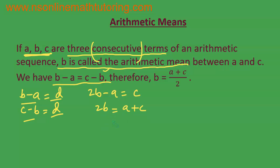Finally, if we divide the entire equation by 2, we get b is equal to a plus c over 2. We know that the average of any two numbers is their sum divided by 2. Therefore, b is said to be the arithmetic mean of the numbers a and c — the preceding and succeeding numbers. This is the meaning of arithmetic mean.